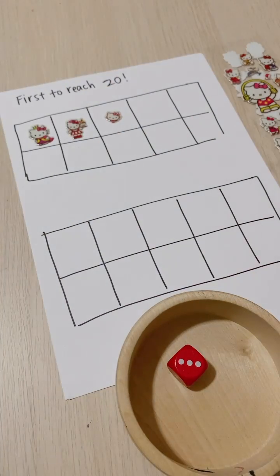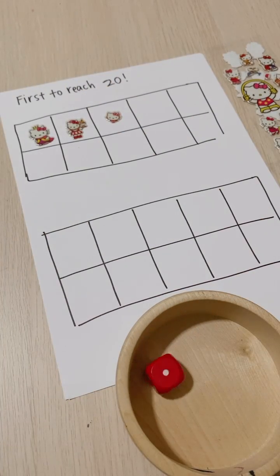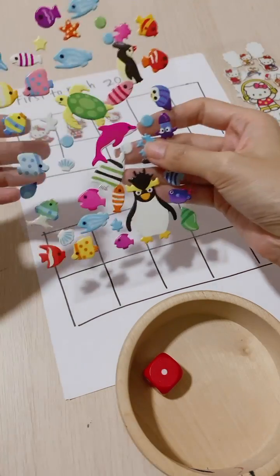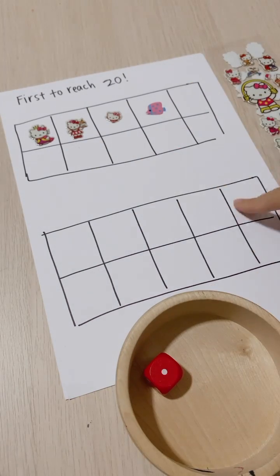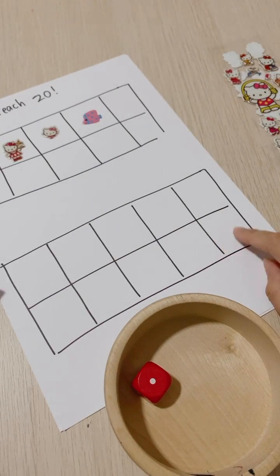And now it's player two's turn. Player two will throw. Oh, one. So player two will get one sticker and stick. We will go on, follow accordingly, and we'll see who is the player